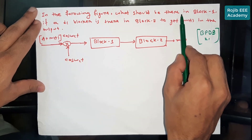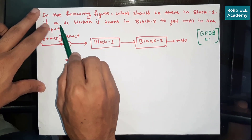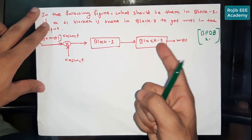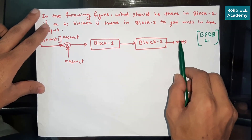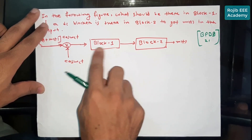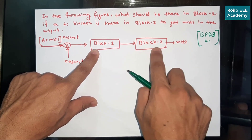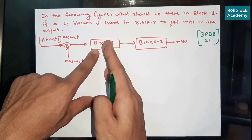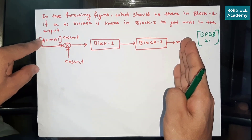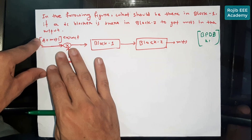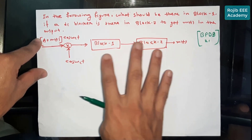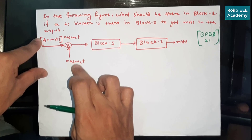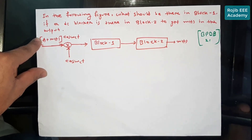In the following figure, what should be there in Block 1? Block 1 is the key component to use if a DC blocker is in Block 2. That means Block 2 is the DC blocker, which removes the DC component to get an empty signal. Block 1 is the key element, and Block 2 is the DC blocker.